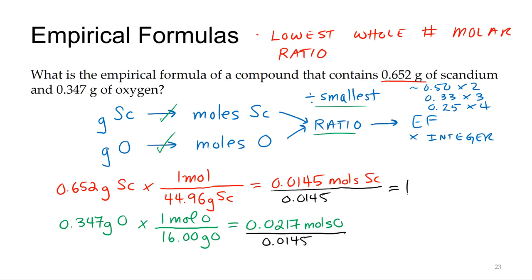Obviously that's going to equal 1. And then when I take 0.0217 divided by 0.0145, I get 1.496 and some change. If I convert that to three significant figures, that is 1.50. So now I can see that the ratio is 1 to 1.5, and that's technically the ratio of scandium to oxygen.